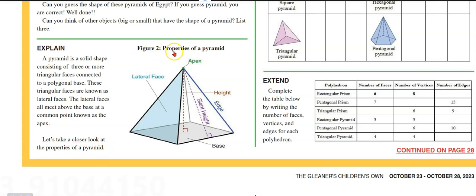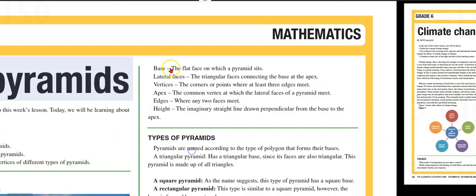Here we have figure two, properties of a pyramid. We have lateral faces here, and the base. This one looks like maybe a square. We have the common point above the base at which all these lateral faces meet, the apex. We have the height, the slant height, and we have an edge. Base.